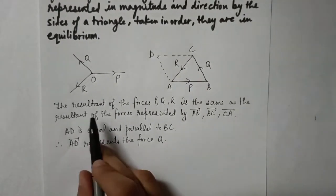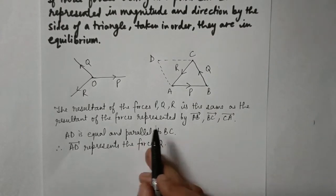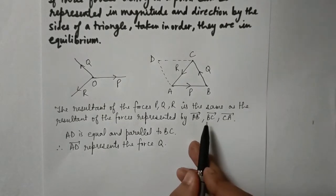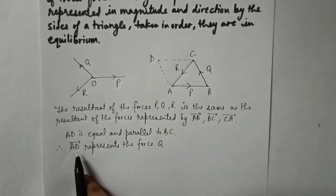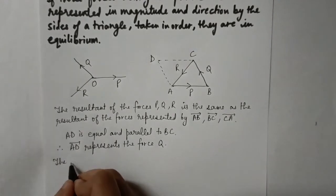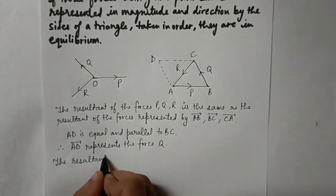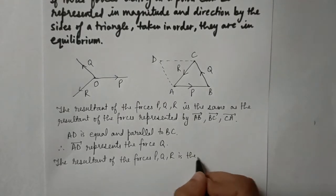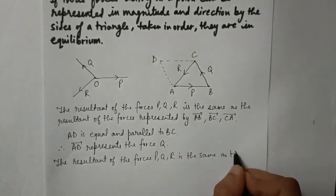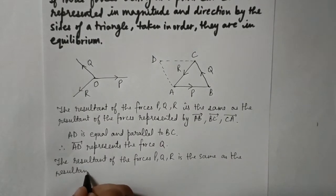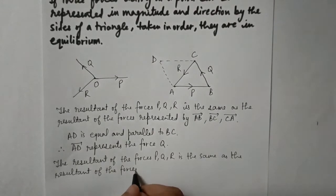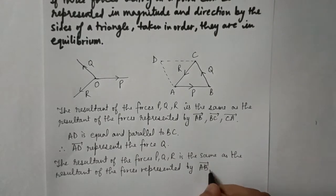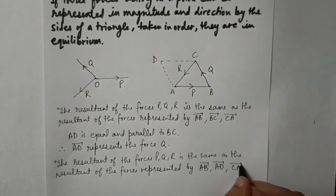Now we know that the resultant of the forces P, Q, R is the same as the resultant of forces represented by AB, BC, and CA. Instead of BC vector, we can also write AD vector because AD vector also represents the force Q. So the resultant of the forces P, Q, R is the same as the resultant of the forces represented by AB vector, AD vector, and CA vector.